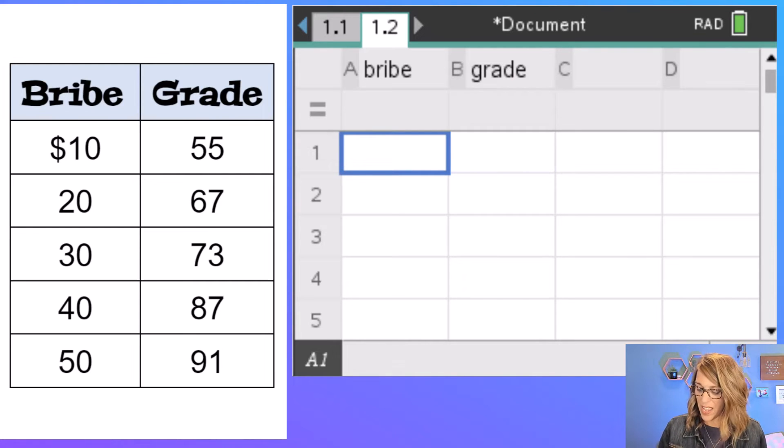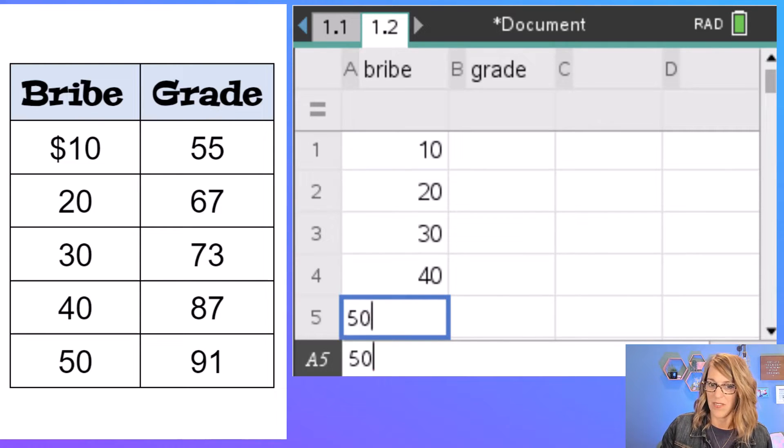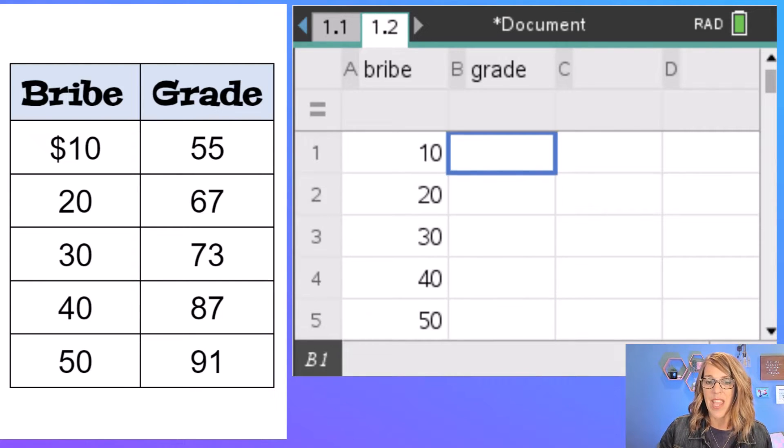I am going to arrow down so I'm in that first entry cell for bribe and we've got 10, enter, 20, enter, 30, 40, and 50.